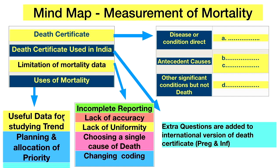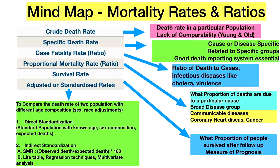Uses of mortality data include studying the trend of any disease problem in the community and planning and allocating priority resources. Coming to mortality rates: crude death rate is the death rate in a particular population and is limited by lack of comparability between different populations (e.g., young vs. old). Specific death rate is cause- or disease-specific, related to specific groups like tuberculosis mortality among tuberculosis patients. Case fatality rate is a ratio of deaths to cases, useful in acute infectious diseases like cholera, and is a measure of virulence.